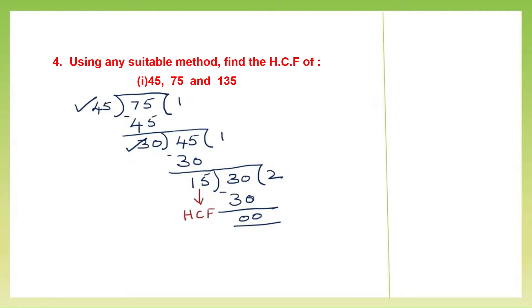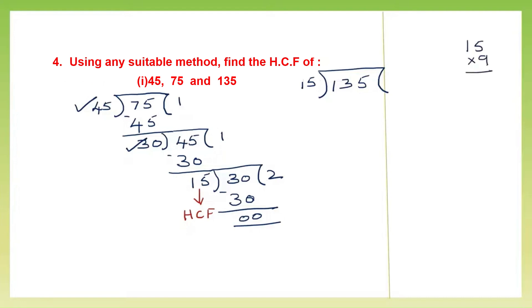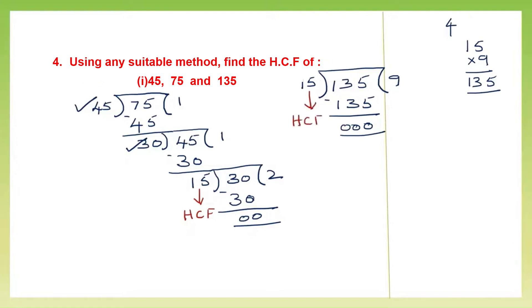Now I'm going to use 15 and 135. So put the bigger number 135 inside and divide it by 15. Now 15 into 9: 9 fives are 45 carry 4; 9 ones are 9 plus 4 is 13. So that's 135 — 15 into 9 is 135 itself. So the remainder is 0. So which is the divisor that gave us the remainder 0? 15. So 15 is the HCF. The HCF of 45, 75 and 135 is 15.